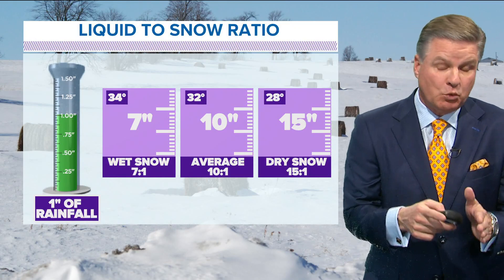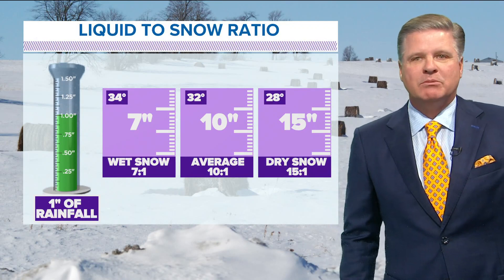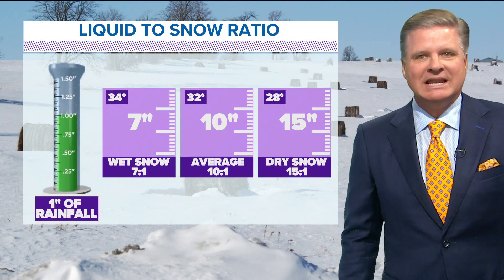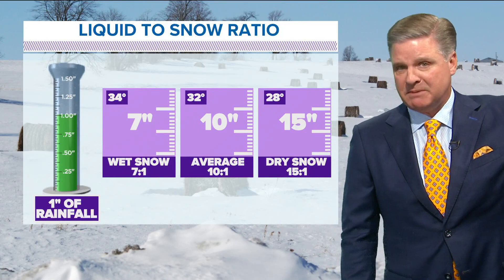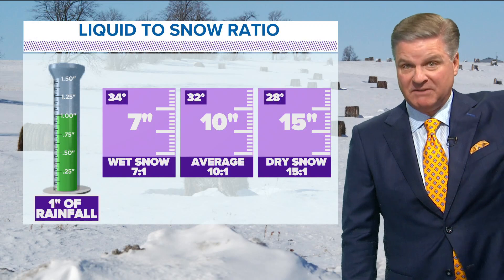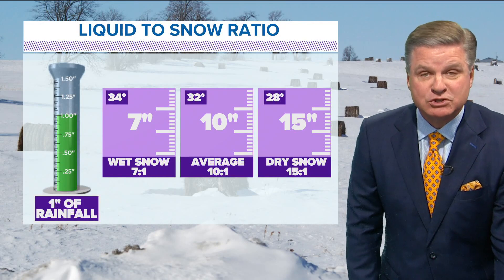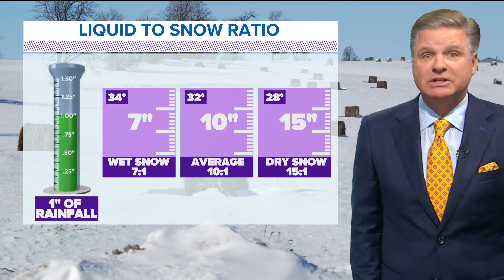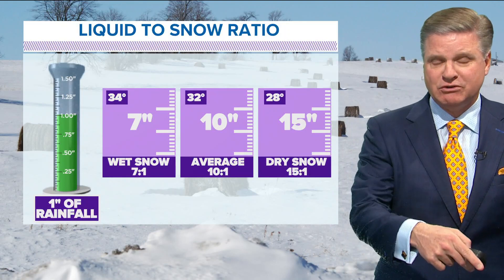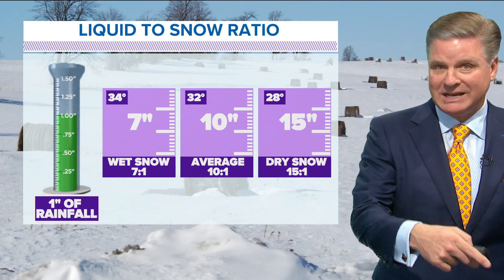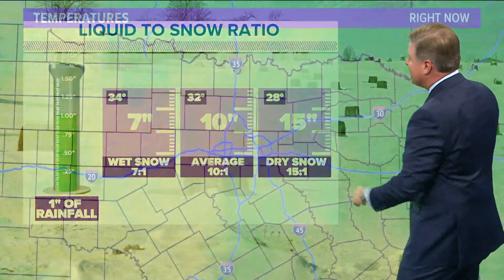The warmer it is, the closer to 32, 33, or 34 degrees. And I know you're at home right now saying, 'He doesn't know what he's talking about — you can't have snow at 34 degrees.' Absolutely you can. Remember, temperatures are taken about six feet above the surface. So it might be 34 degrees up here, but down at the ground where the snow is accumulating, it will be 32 degrees. And it's 32 degrees at different levels of the atmosphere, so you can have snow when the temperature is 28, 29, 30, 31, 32, 33, or 34 degrees.